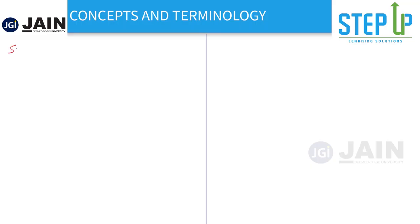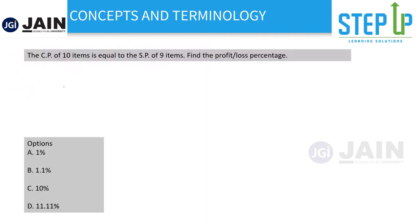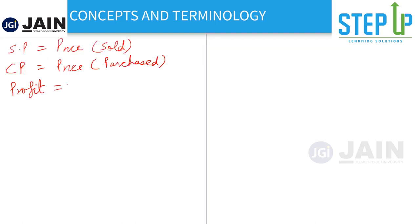First, let's cover concepts and terminology. SP is your selling price — the price at which you sell things. CP is your cost price — the price at which you have bought or purchased things. Profit or loss is the difference: profit is when SP is greater than CP, so profit equals SP minus CP.